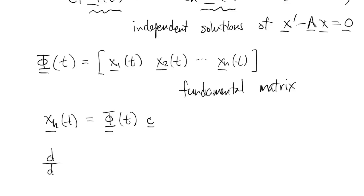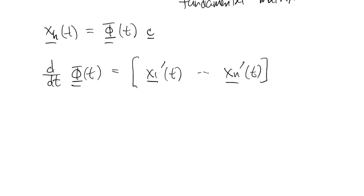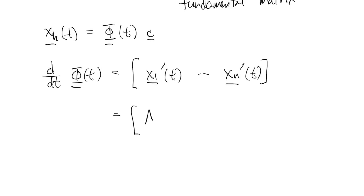Something we didn't look at before is that phi has its own important property. If we take its derivative, we end up taking the derivative column-wise. And then each of these xj's is a solution of the homogeneous problem. So x1 prime equals ax1 and so on. And because of the properties of matrix and matrix vector multiplication, we can take that a outside on the left.